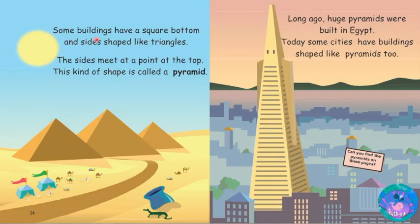Some buildings have a square bottom and sides shaped like triangles. The sides meet up at a point at the top — this kind of shape is called a pyramid. Long ago, huge pyramids were built in Egypt. Today some cities have buildings shaped like pyramids too. Can you find the pyramids on these pages?